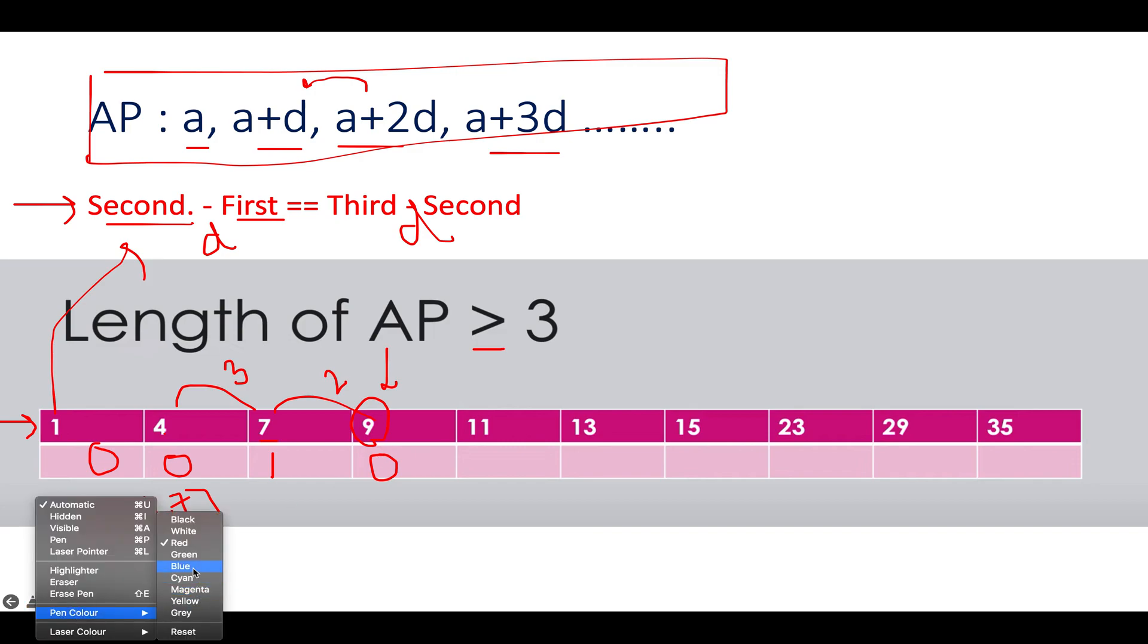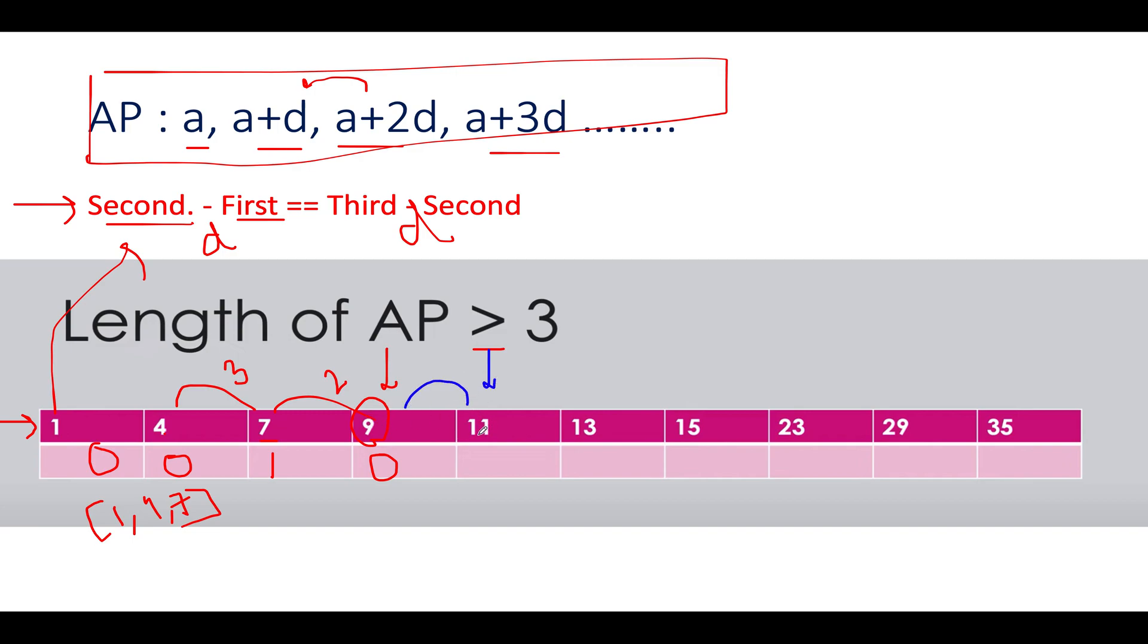Let me change the color of the pen for better understanding. Now we have 11. We'll calculate the difference between the third and second element, which is two in this case. 11 minus 9 is 2, and 9 minus 7 is again 2. That means both are equal, so they form an AP progression. We'll simply update the value to 1. Here we identified another progression: [7,9,11].